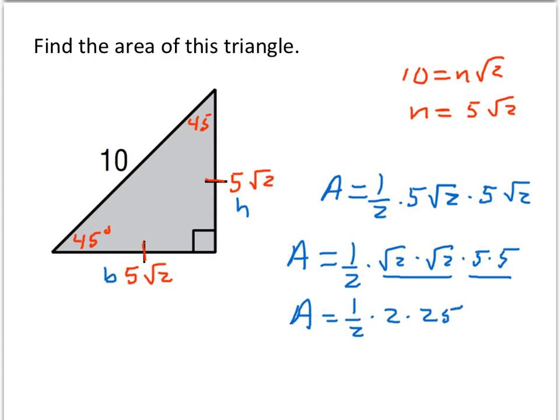And then if we multiply straight across, we have area is 1 half times 2 is just 1. And 1 times 25 is just 25 square units.